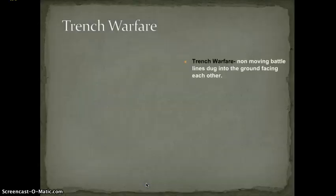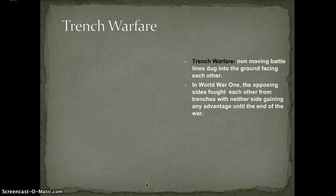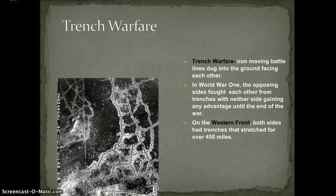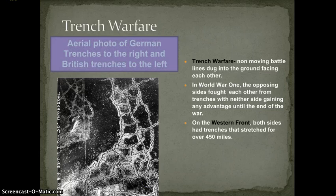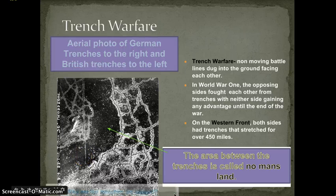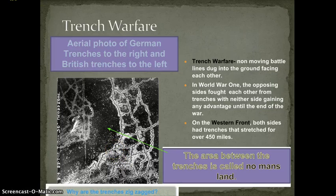Let's talk about trench warfare. Trench warfare was new — non-moving battle lines dug into the ground facing each other. The opposing sides fought from their trenches, and neither side really gained an advantage. They may gain a few hundred yards or a few miles, but they just kept digging longer and longer. On the western front, both sides had trenches that stretched for over 450 miles. This is an aerial view of the German and British trenches — the British on the left, the Germans on the right. The area between the two was filled with barbed wire and was called No Man's Land.